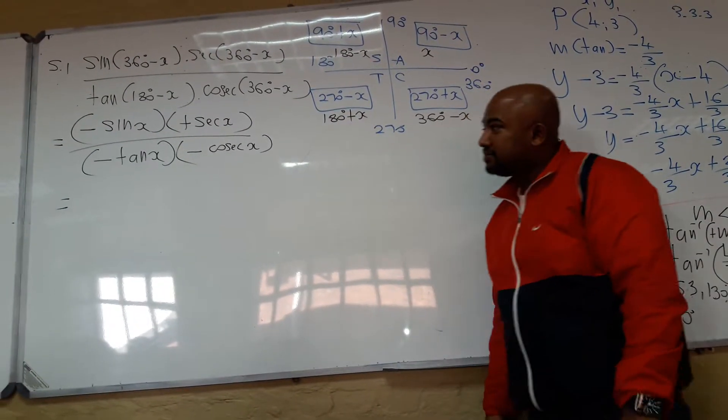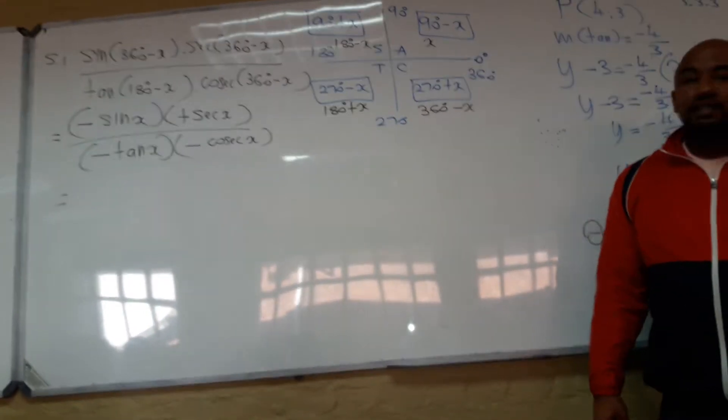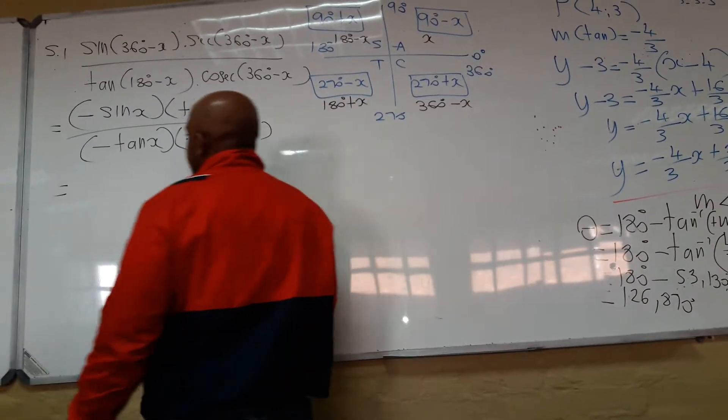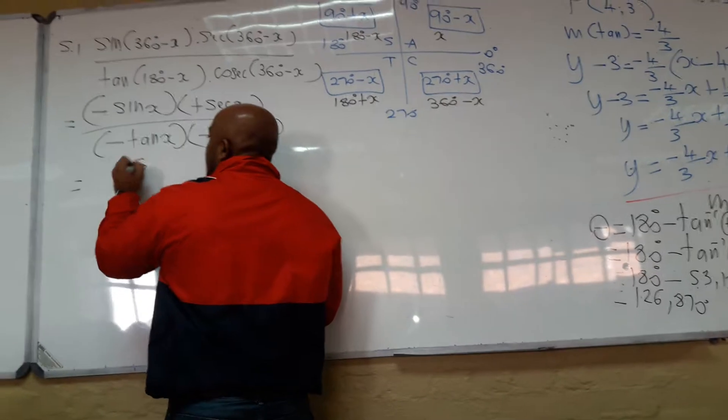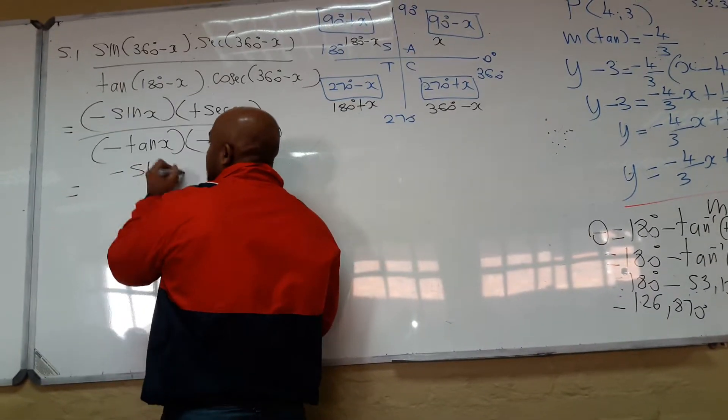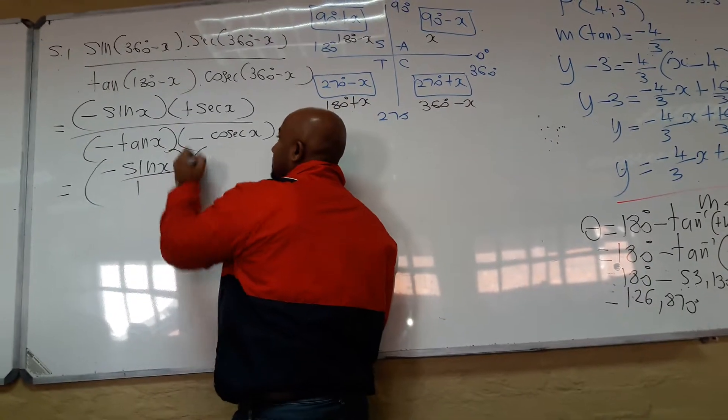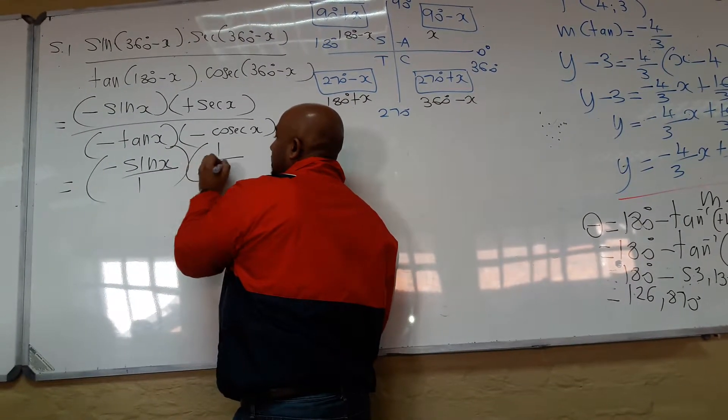Now, what can we do? Simplify. Let's change everything to sine and cosine. So I've got minus sine x on the top, over 1. Then I've got sec. What is sec? 1 over cosine.